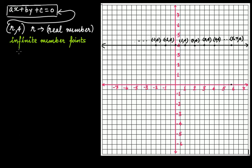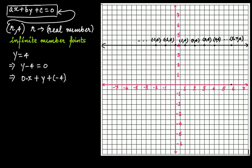Since this is point 4, it means y equals 4, because the y-coordinate is 4. We can write this y equals 4 as y minus 4 equals 0. Let's rewrite it as 0 multiplied by x plus y plus (minus 4) equals 0. We have rewritten this equation in the form of a linear equation in two variables, ax plus by plus c equals 0, where a is 0, b is 1, and c is minus 4.